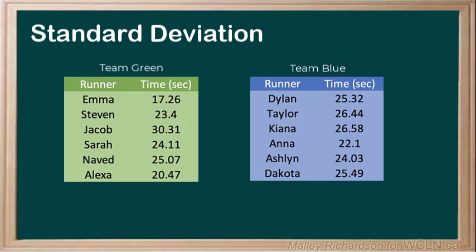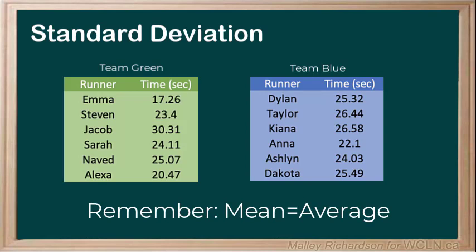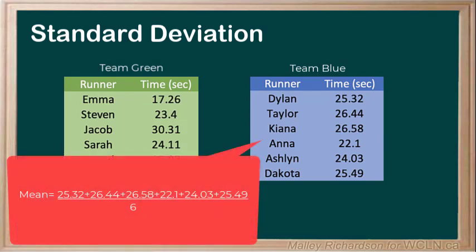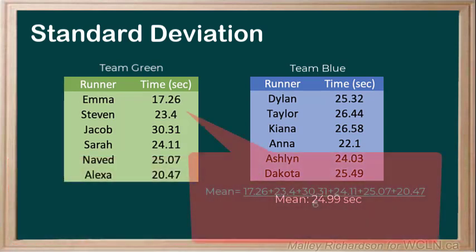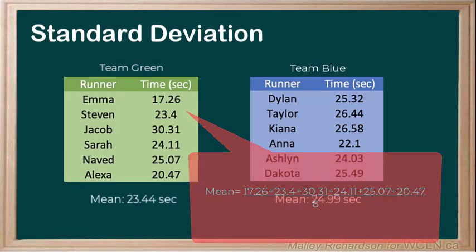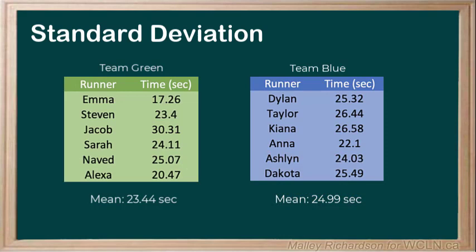The green team suggests simply finding the mean, or average, of each team's time to see who ran the better race. The average of the blue team, adding up all their times and dividing by the number of team members, gives 24.99 seconds, versus the mean of the green team, which is 23.44 seconds. According to these results, the green team had a lower mean, which leads us to believe the green team ran a better race.